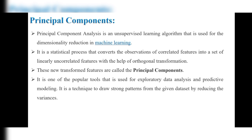PCA is a statistical process that converts observations of correlated features into a set of linearly uncorrelated features with the help of orthogonal transformation. These new transformed features are called the principal components. It is one of the popular tools used for exploratory data analysis and predictive modeling.